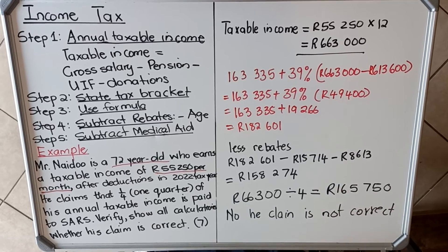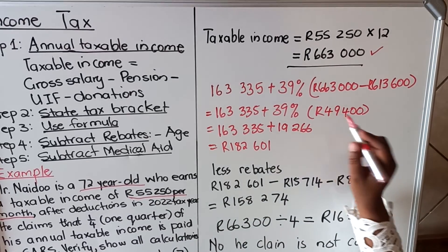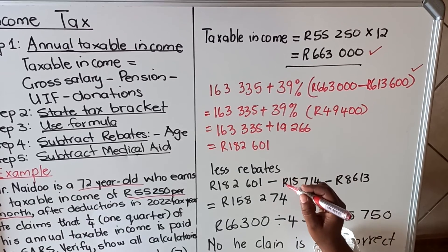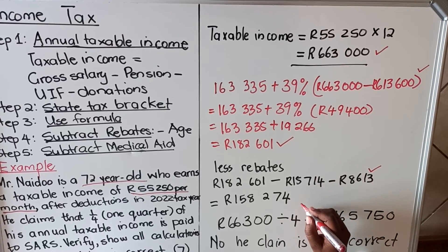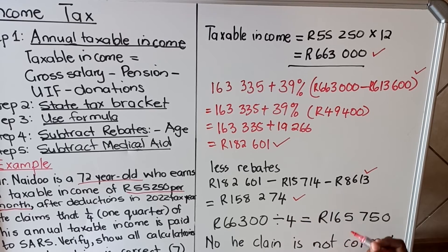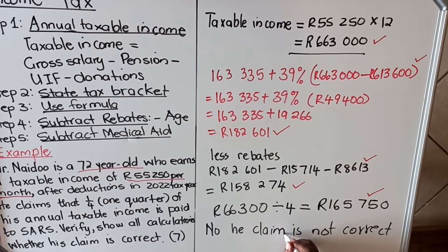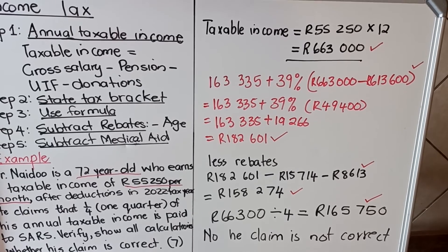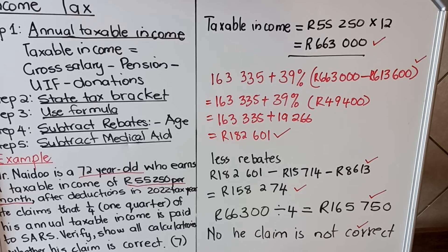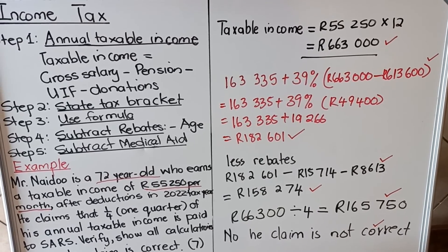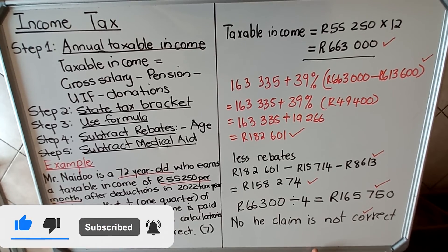This question was seven marks. The first mark is for calculating the taxable income, the second for identifying the tax bracket, the third for using the formula correctly, the fourth for applying the rebates and getting the correct amount, the fifth and sixth for finding the quarter amount, and the seventh mark for clearly stating whether the claim is correct or not. Read the question carefully and visit learnwithza.com to book a class.